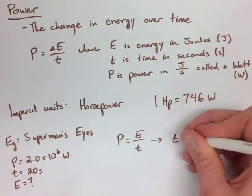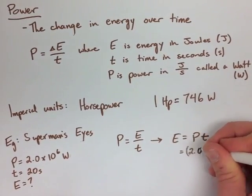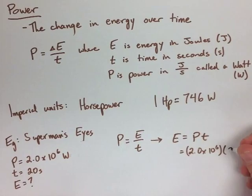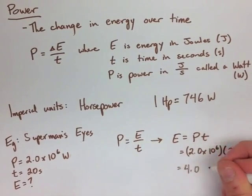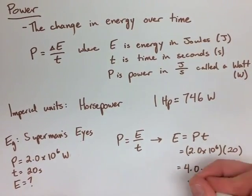Well, we know power is E over T, and then E would have to be P times T. So we substitute our numbers in, and we get an energy of 4.0 times 10 to the 7 joules.